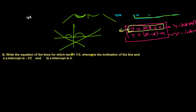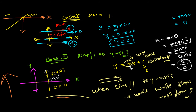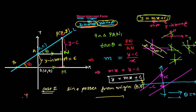The first question is: y-intercept is minus 3 by 2 and x-intercept is 4. Recently we learned when we have y-intercept and when we have x-intercept. When we have y-intercept, the equation of the line is y equals mx plus c, where y and x are the general point, m is the slope of the line, and c is the y-intercept.